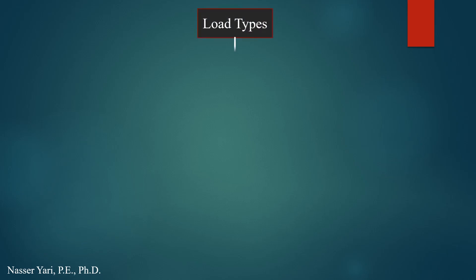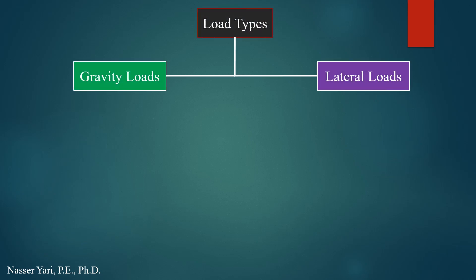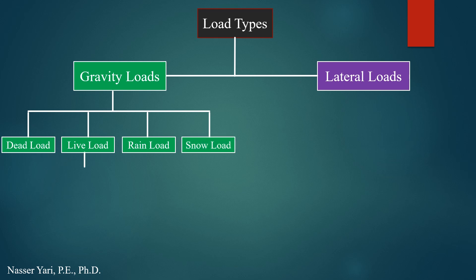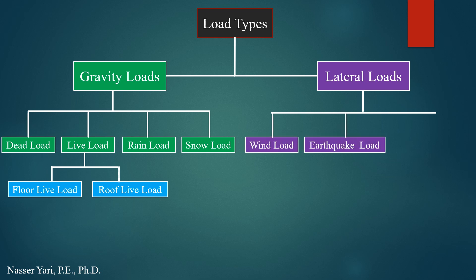Load types can be divided into vertical load and horizontal load, or gravity load and lateral load. Gravity load can include dead load, live load, rain load, and snow load. Live load can also include roof live load and floor live load. The lateral load includes wind load and earthquake load, and other loads such as earth pressure, water pressure, blast, and impact load.